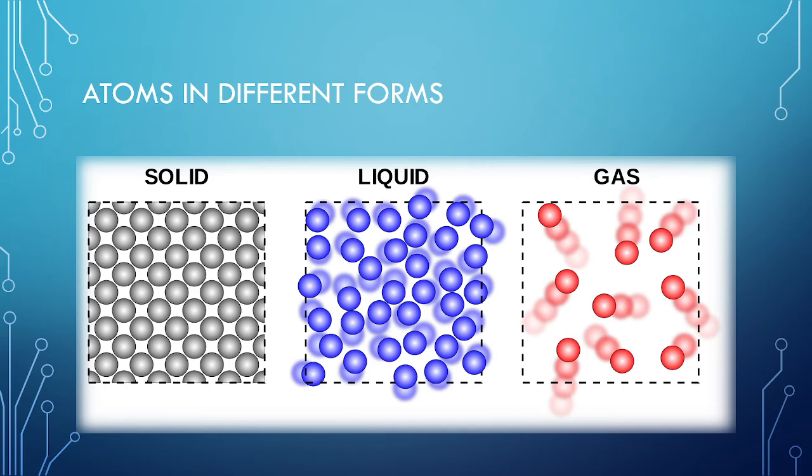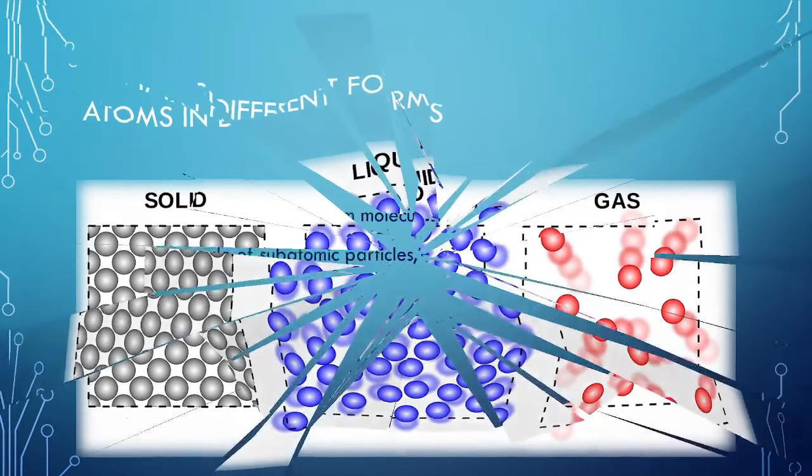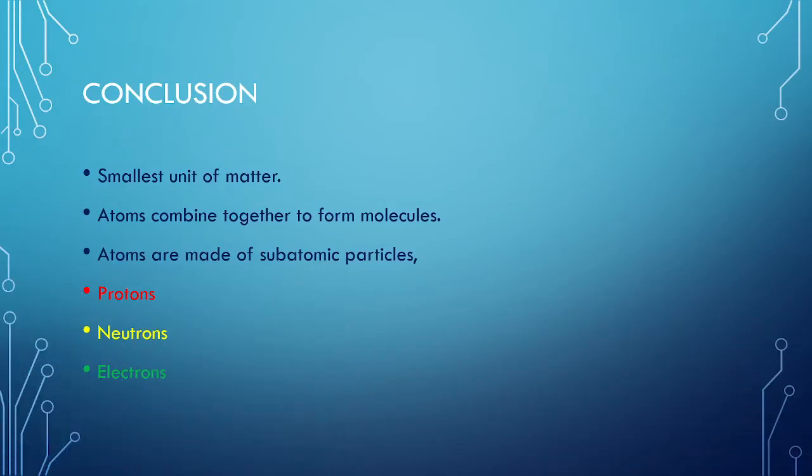In solids, the molecules are tightly packed as you can see in the diagram. In liquids, they are not so tightly packed, and in gases, they are not tightly packed and are free to move.